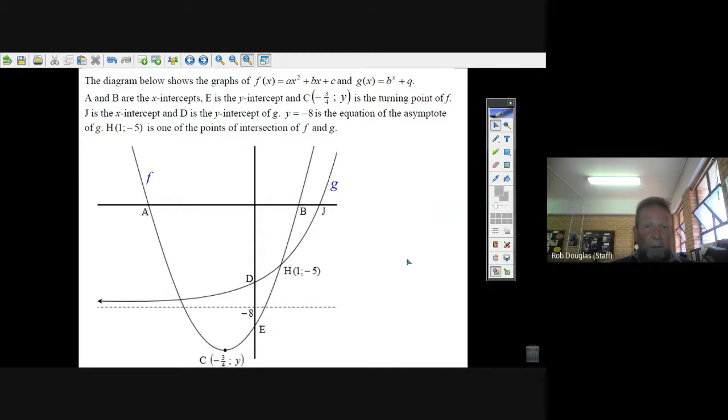Here is the parabola f. It's ax squared plus bx plus c. And there's an exponential equation, because I can see this dotted line taking off just like an exponential equation. It's b to the x plus q. a and b are the x-intercepts of the parabola, and e is the y-intercept of the parabola right there.